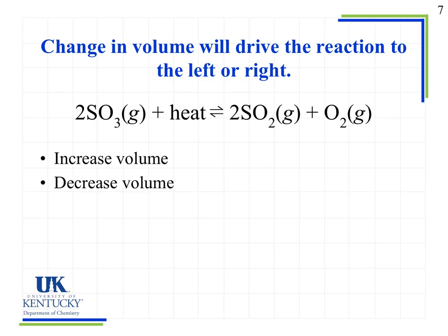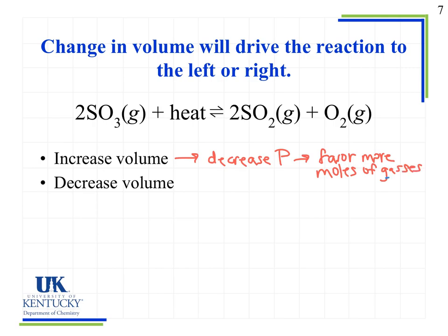The last disturbance we'll look at is whether we increase or decrease the volume. When we increase the volume, we actually decrease the pressure, and that is going to favor more moles of gases. The key is that we're only looking at the moles of gas. For this reaction, everything is in the gas phase, so we look at where we have more moles. Notice that on the left side there are two moles of gas and on the right side there are three. So if we increase the volume and decrease the pressure, the reaction shifts to the right.